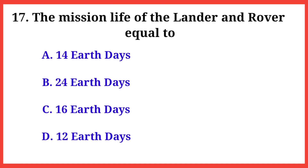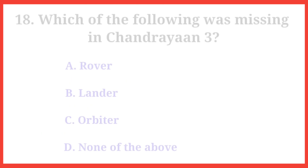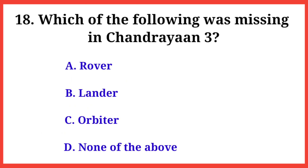Q17. The mission life of the lander and rover is equal to? The right answer is option A: 14 Earth days.